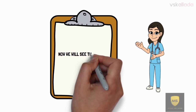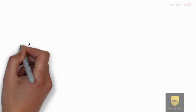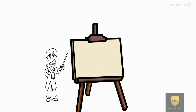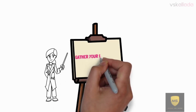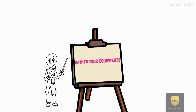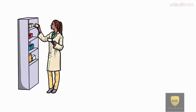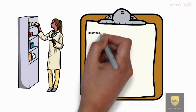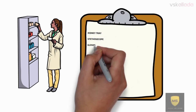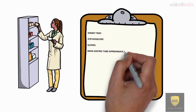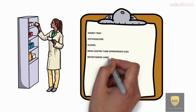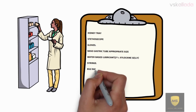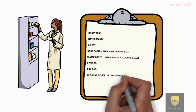Now we can see the steps. Step one: arrange your equipment before going to do any procedure. Equipment includes kidney tray, stethoscope, gloves, nasogastric tube of appropriate size, water-based lubricant, syringe, securing device or tape, and anesthetic throat spray.